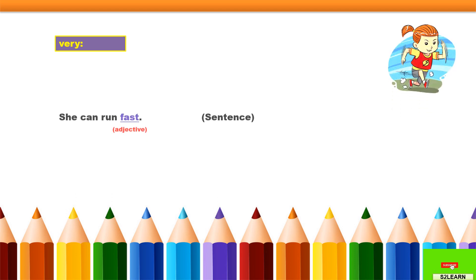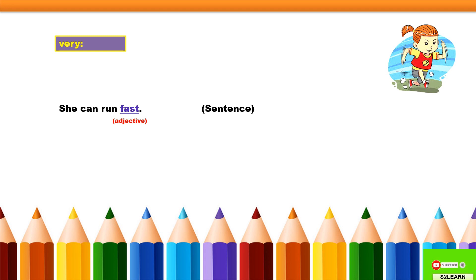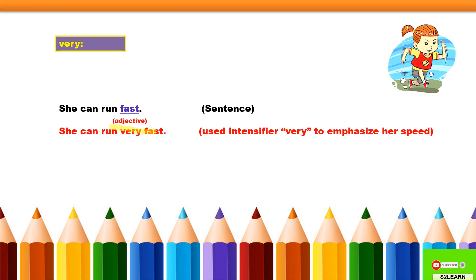We will start with the common intensifier, that is 'very.' The sentence is: 'She can run fast.' This is a simple sentence, and 'fast' is an adjective here. When I add the intensifier 'very,' the sentence becomes: 'She can run very fast.' I have used the intensifier 'very' to emphasize her speed — I want to say that she runs very fast.